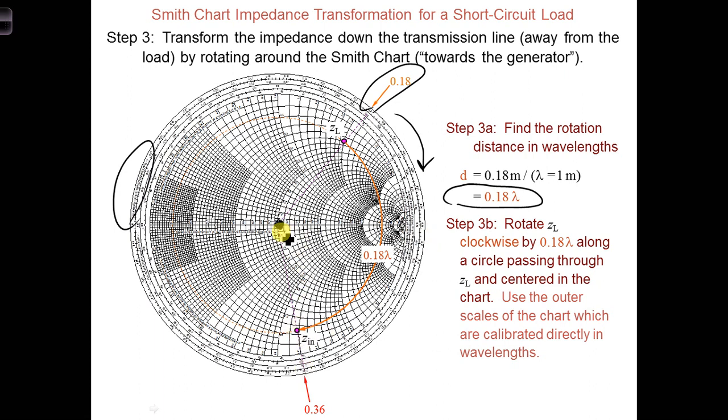Then you measure out the same distance here and you put your Z_in dot right there. So after you've rotated around, then you can draw a straight line from this 0.36 to the middle. And at this distance, which is the same as this distance, right here would be your Z_in.